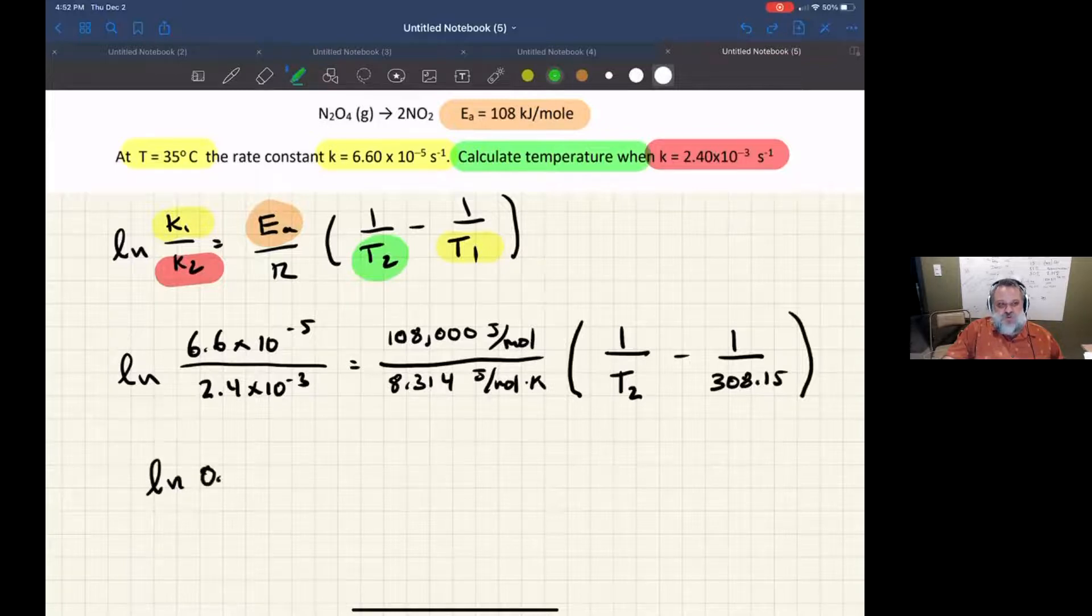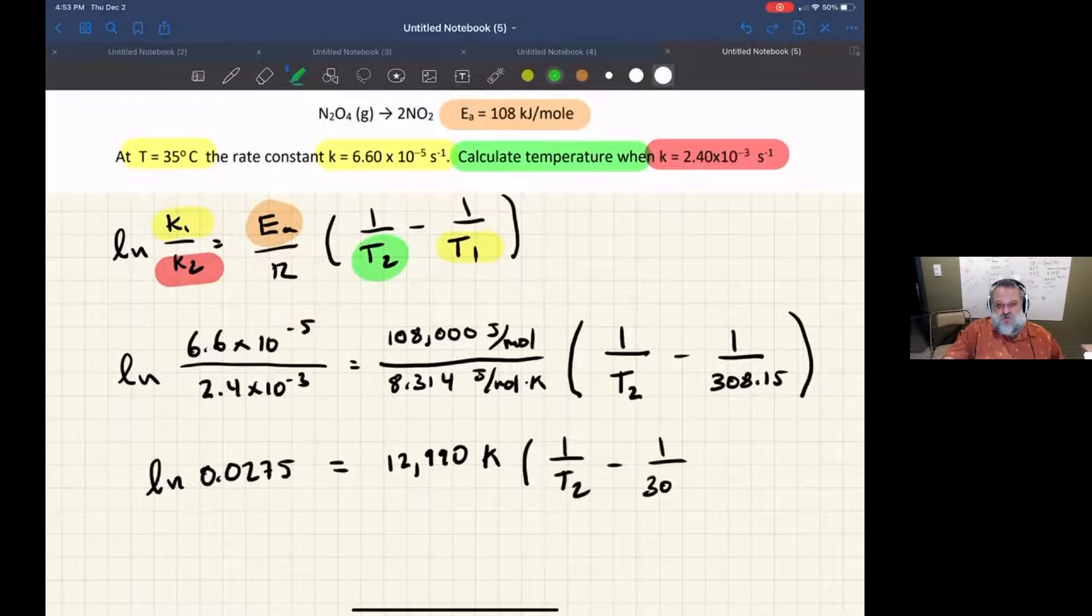So let's go ahead and do the natural log of the ratio. I get 0.0275 for the ratio. And I get 12,990 Kelvin for the activation energy divided by the gas constant. I'm going to carry all this parentheses along with me before I simplify again.